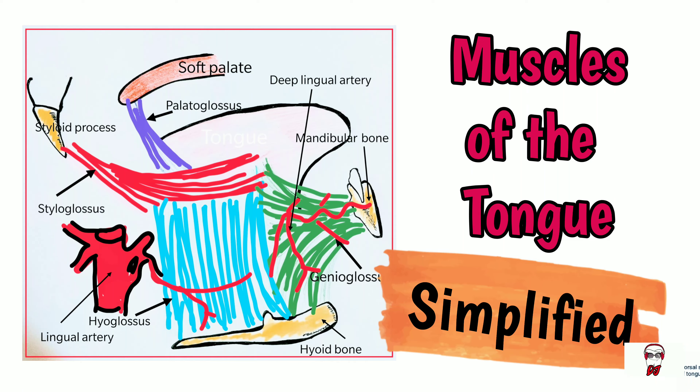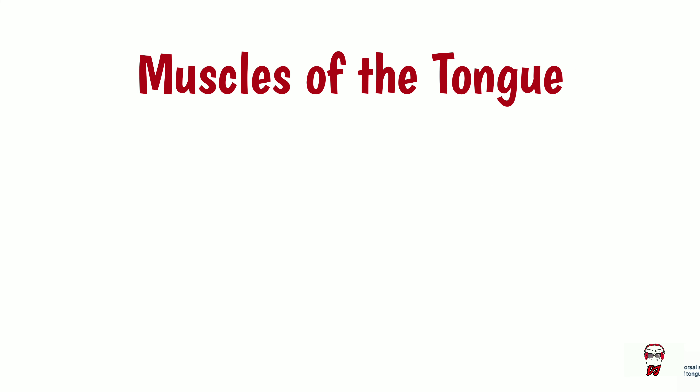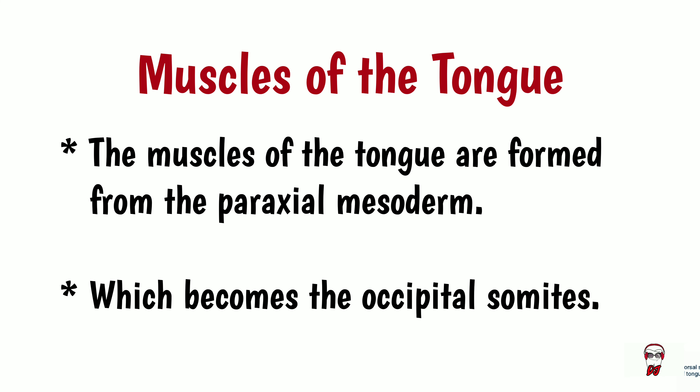Hey everyone, in this video we're going to go through the muscles of the tongue. The muscles of the tongue are formed from the paraxial mesoderm, which eventually become the occipital somites.